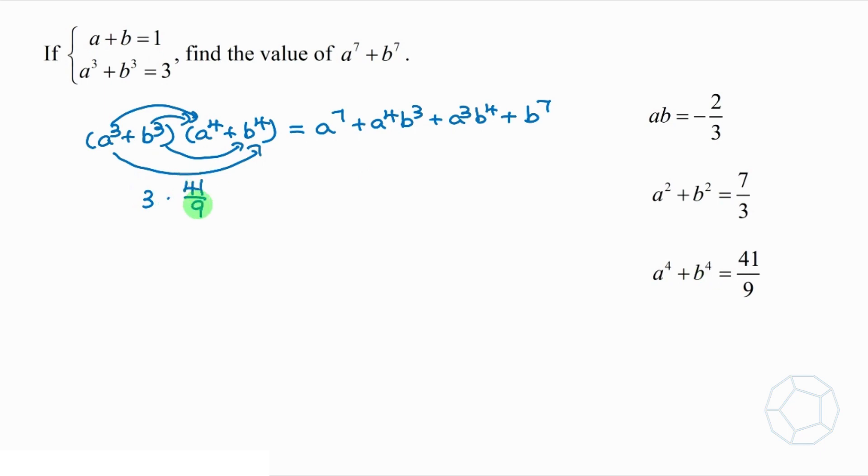On the right, we group a to the power 7 and b to the power 7 together like this. For the middle two terms, we take out the common factor to get a cube times b cube times bracket a plus b.